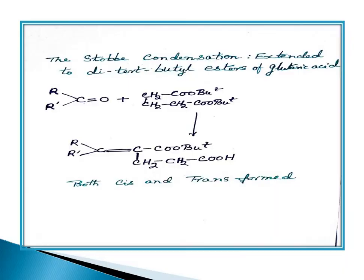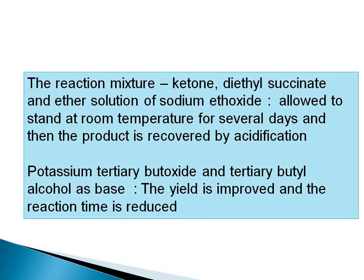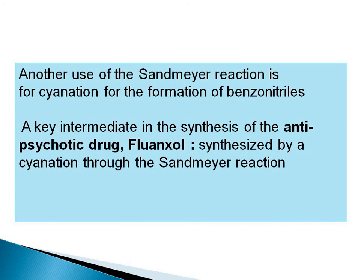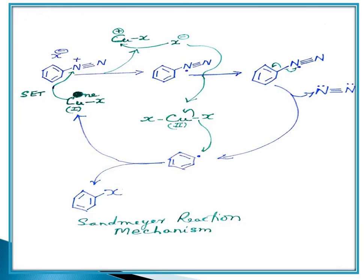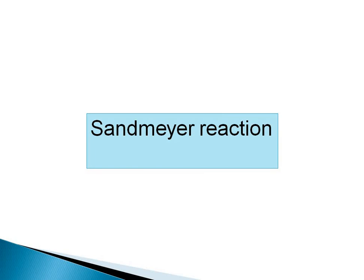In summary: Sandmeyer reaction proceeds through radical nucleophilic aromatic substitution. Stobbe condensation uses diethyl succinate or glutaric acid diester (butyl ester), proceeds through an enolate and gamma-lactone intermediate. Gattermann-Koch is a formylation reaction. Thank you all.